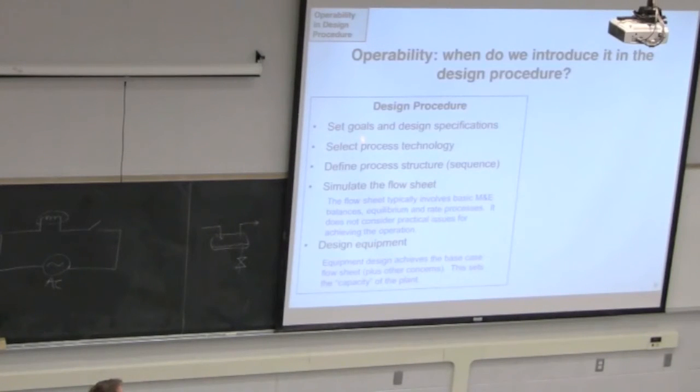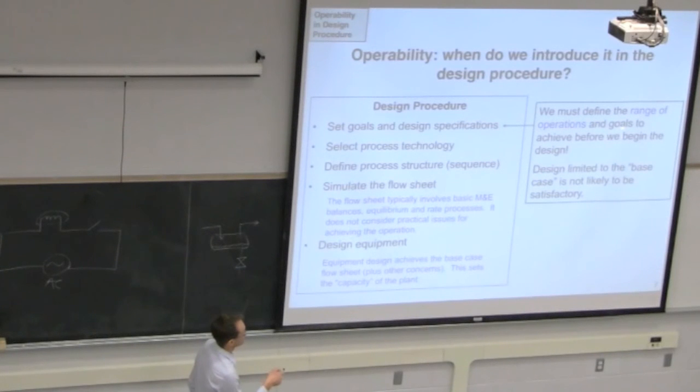So here's that procedure I outlined. We've set our goals and our design specifications. We're going to modify that now. Instead of a single goal and a single base case, we need to present multiple goals and a range of conditions to operate. We may want to operate our process not only at 1,000 tons per year of methanol, but we also want to make sure that that process will work at 600 tons per year and 1,200 tons per year of methanol. So our process needs to be capable of operating over a range of conditions or a range of goals. What else might come in over here? So it's not just the range of the conditions. What else might we need to consider when we modify our base case? So not just throughput. The example I gave was throughput. What else might change?